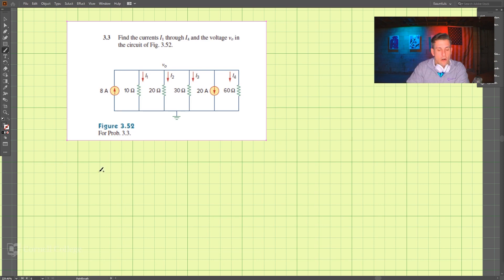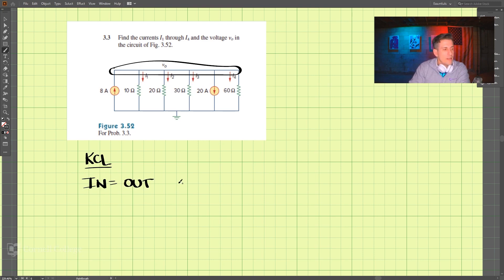Now, to start off this problem, let's write out Kirchhoff's current law, and we're using this node at the top here, this whole node. So remember, Kirchhoff's current law is in equals out, or you can write it also as in minus out equals 0.